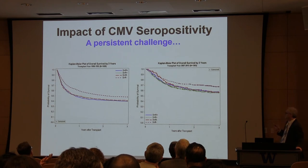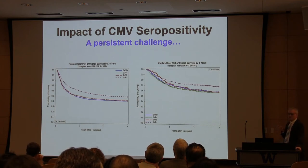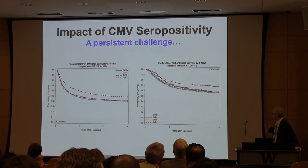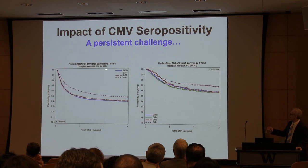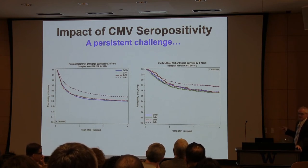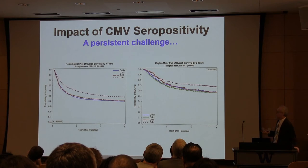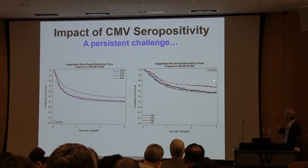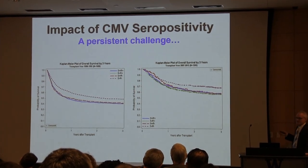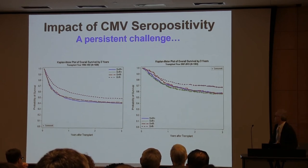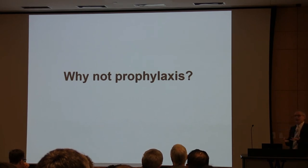All this progress notwithstanding, there was a persistent problem: people who were CMV seropositive or had a positive donor still had an overall higher mortality — 8 to 10 percent different — even though there was virtually no CMV disease. This data from patients transplanted between 1988 and 1992, and from a very recent cohort followed for three years, confirms that this difference persists. Transplant outcomes have improved through many interventions, but the gap between CMV-negative and CMV-positive serostatus patients has persisted, also confirmed in multivariate models.